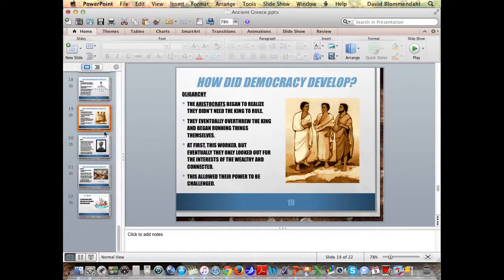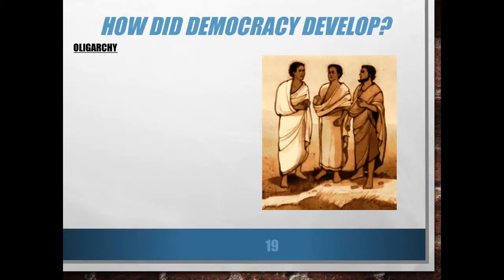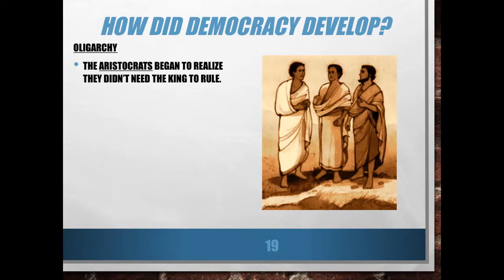Let's talk about our next topic: oligarchy. The aristocrats began to realize they did not need the king to rule. Eventually they said, let's get rid of the king and we'll continue doing what we've been doing — we'll just do it without him and we'll get all the glory instead of the king. And that seemed to work well for a while.